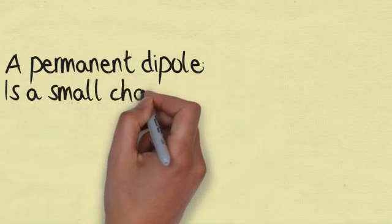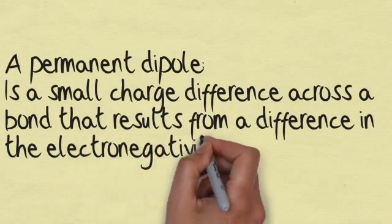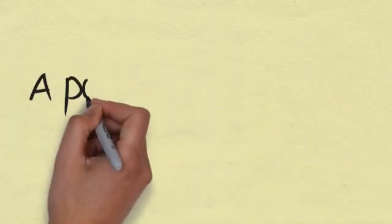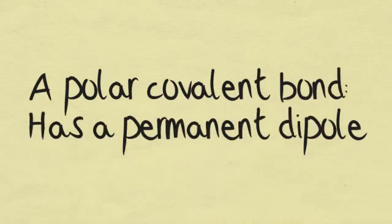A permanent dipole is a small charge difference across a bond that results from a difference in the electronegativities of the bonded atoms. A polar covalent bond has a permanent dipole.